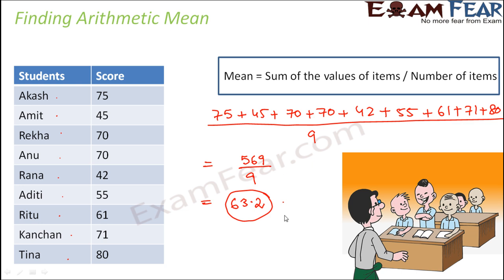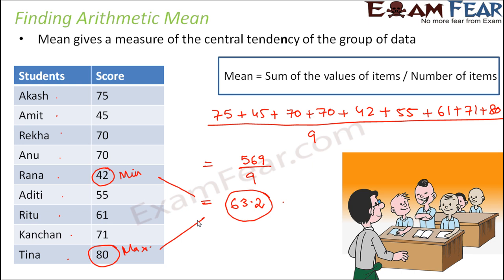When you look at this value, 63.2, it lies somewhere in between the minimum value — which is 42 — and the maximum value — which is 80. So 63.2 is greater than 42 but less than 80. This shows that mean gives a measure of the central tendency of a group of data.